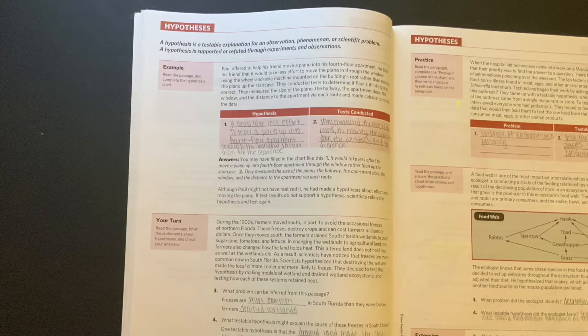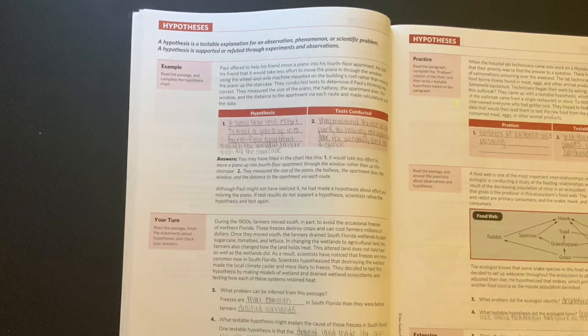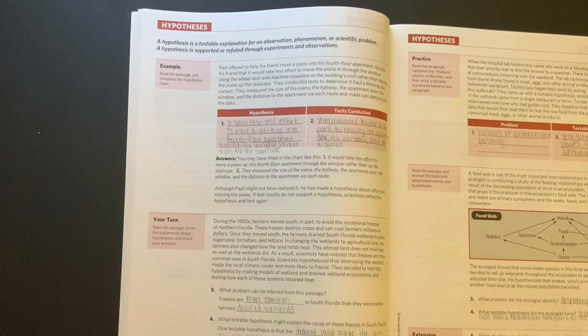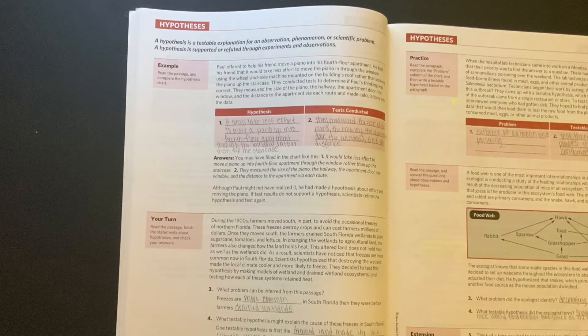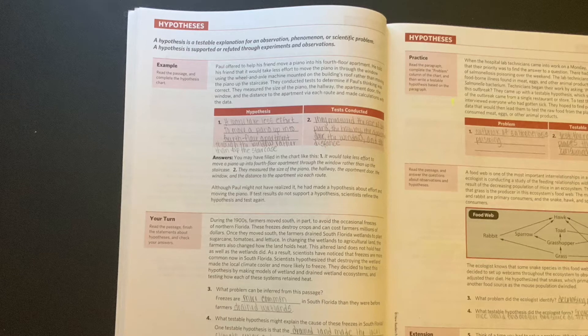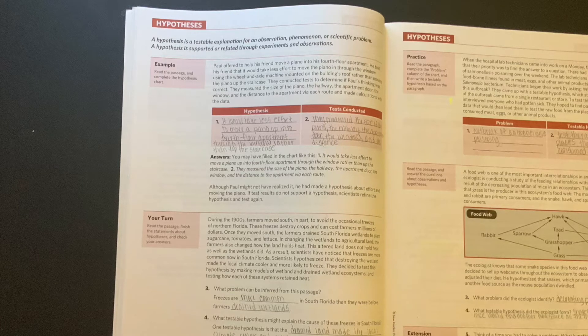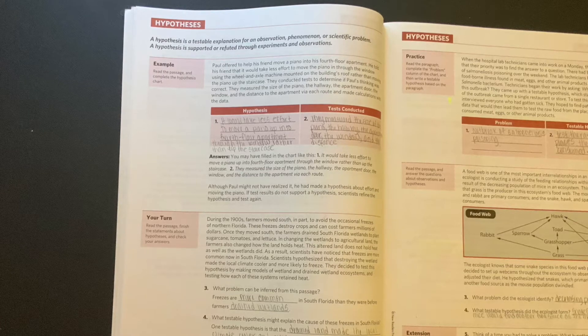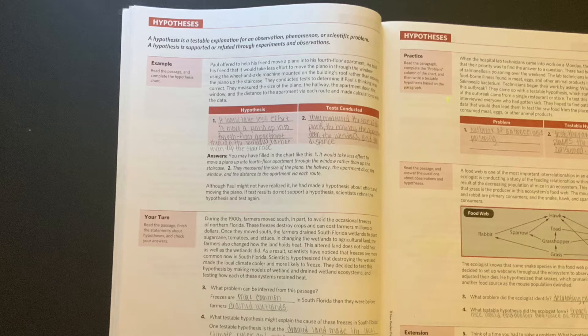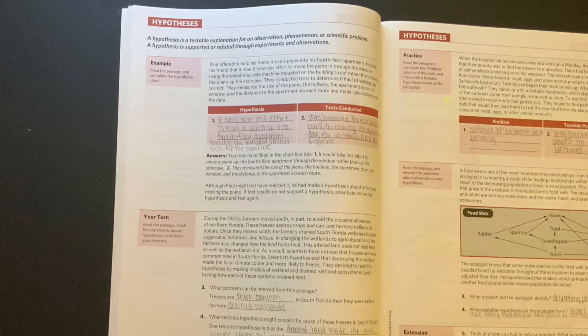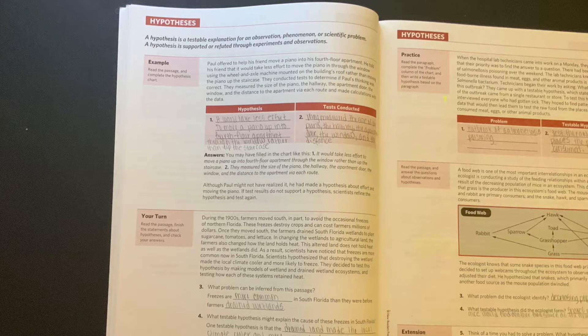Okay, so what was the hypothesis? The hypothesis was it would take less effort to move a piano up into a four floor apartment through the window rather than up the staircase. Now what was the test that was conducted? They measured the size of the piano, the hallway, the apartment door, the window, and the distance. So whenever you are finding the hypothesis, you pretty much have to find a testable explanation, and that could be an observation or it can be just a scientific problem. They are going to have problems like these on the GED test.